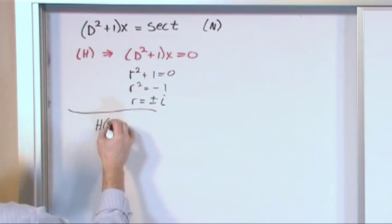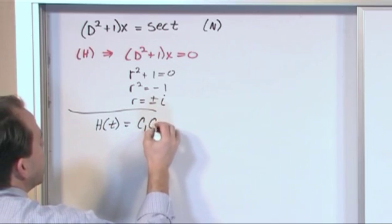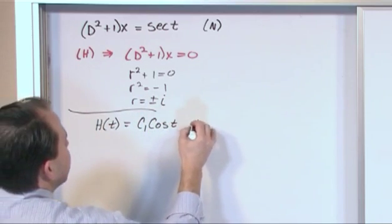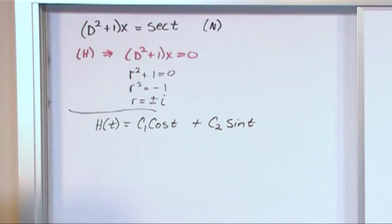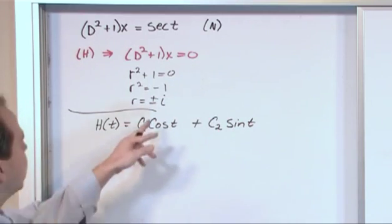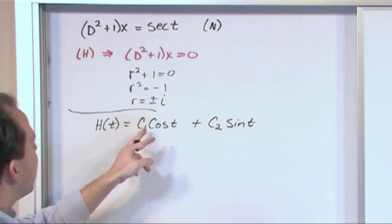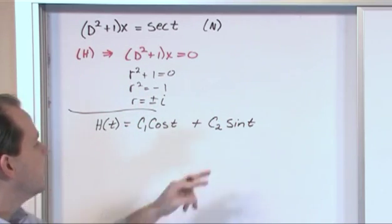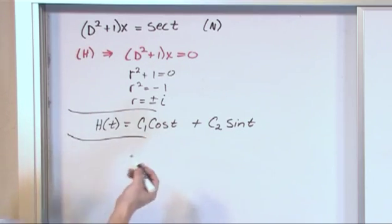So h of t, we can write down right away since we know these roots, is constant 1 cosine of t plus constant 2 sine of t. We've done this so many times I don't really even feel the need to explain it. But basically, the 1 comes and jumps into there. And the 0 is the real part. So you have the e to the 0 t out there. So it doesn't really show up. So this is what we call h of t. It's half the solution.